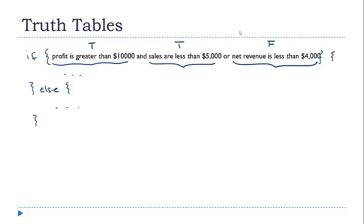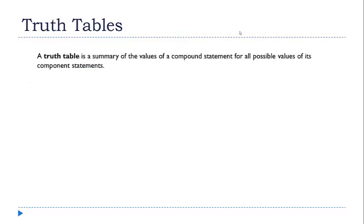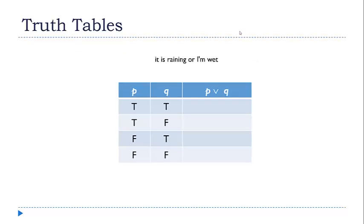The way we're going to approach this is through what are called truth tables. A truth table is a summary of the values of a compound statement for all possible values of its component statements. Let's look at some examples to see how this works in practice. Here I have a very simple compound statement — it's just our logical OR — and I want to create a truth table for this.